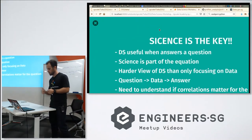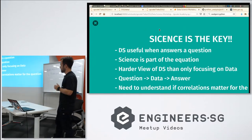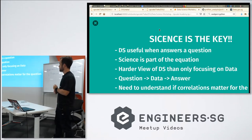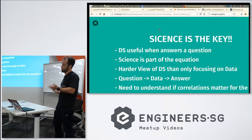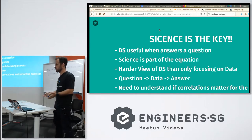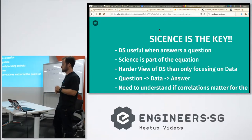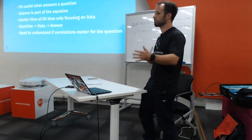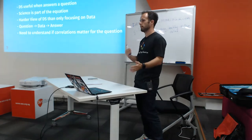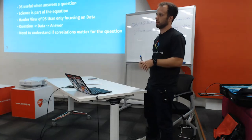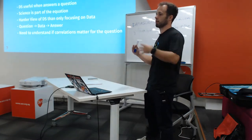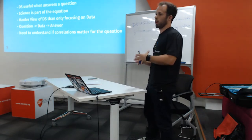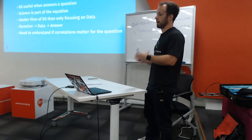The truth is that science is the key of data science. The main point of why data science is useful is because it's able to answer a question. It's very important that the science part is in that equation — that you focus on what you want to achieve, study the field you're working in, and then work with the data in that field. You have a question, you have data, and then you have to release an answer. It's very important to understand the correlations in your data and whether those correlations really matter.